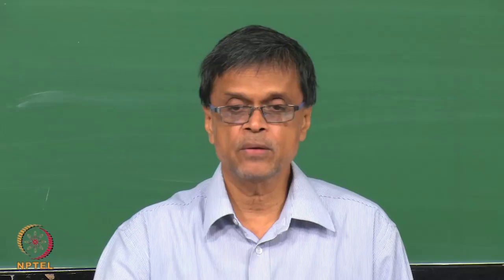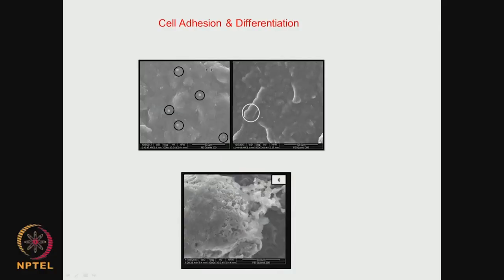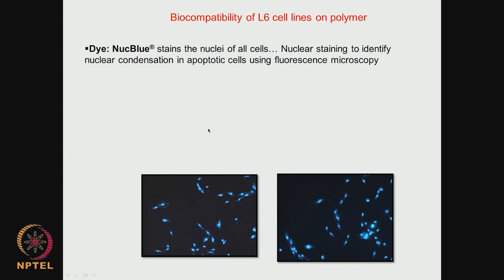If you are doing tissue engineering, you want cells to grow, differentiate, and adhere. You can monitor the cell morphology as a function of time — say 7 days — to see how the cells are growing, whether they are differentiating into spindle-like form, or whether they are dying. This is called cell adhesion monitoring and it is more qualitative in nature. You can monitor them using a scanning electron microscope over a period of up to 7 days. We can also look at the biocompatibility of cells on a surface using dyes like Nuke Blue stain, which stains the nucleus.